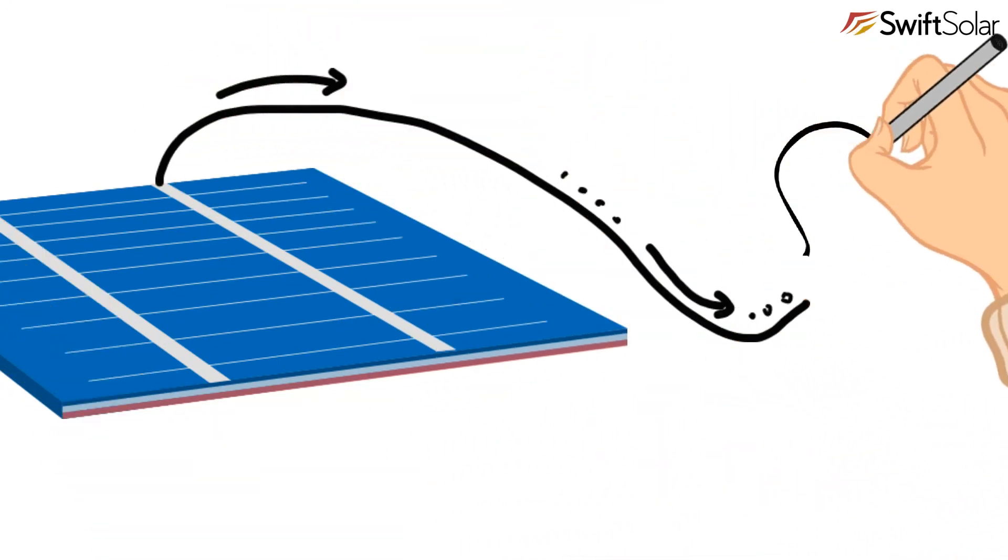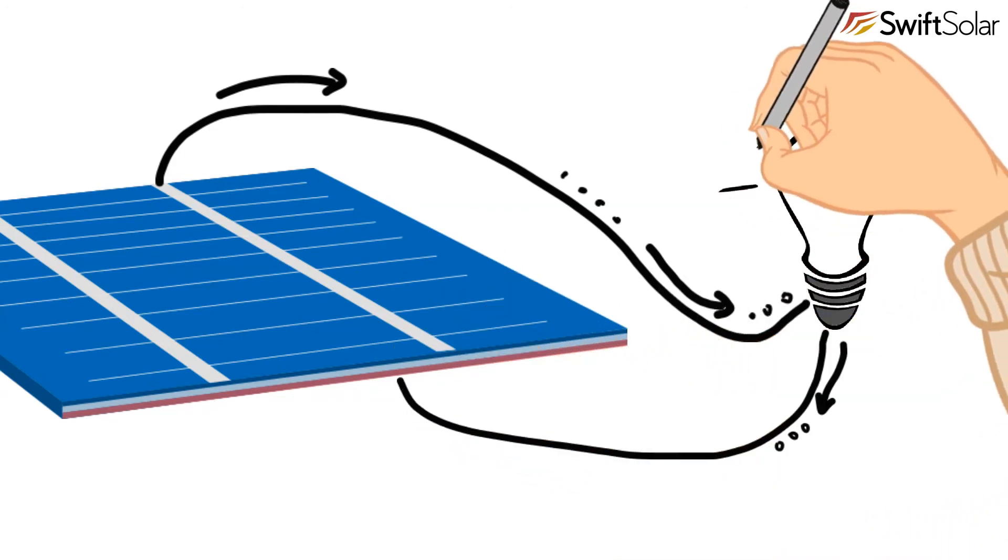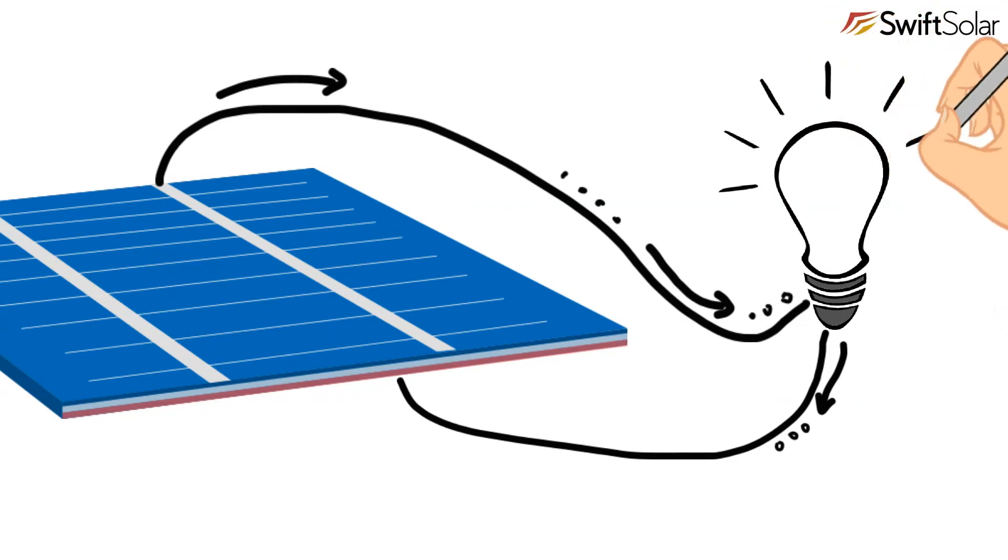We can then connect the wire to appliances, get the electrons to do useful things like lighting a bulb. Once they've used their energy, the electrons will return to the other side of the device and reattach to the semiconductor lattice.